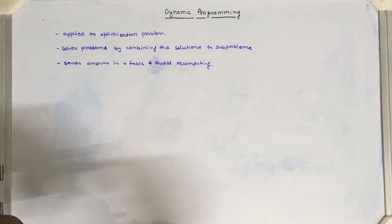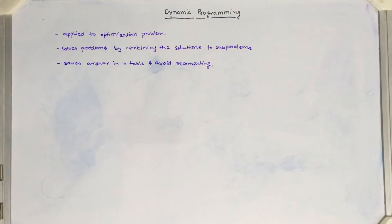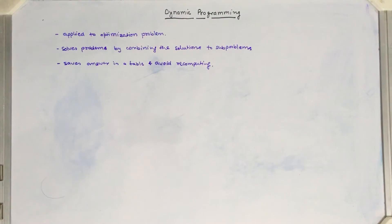The approach we follow in dynamic programming is to divide the problem into different subproblems, find the solution of each subproblem, and then combine them. This seems similar to the divide and conquer approach, but the key difference is that in dynamic programming we try all possible solutions by dividing the problem into subproblems, and we store the solution of each subproblem into a table or variable to avoid recomputing it in subsequent iterations or recursive steps.